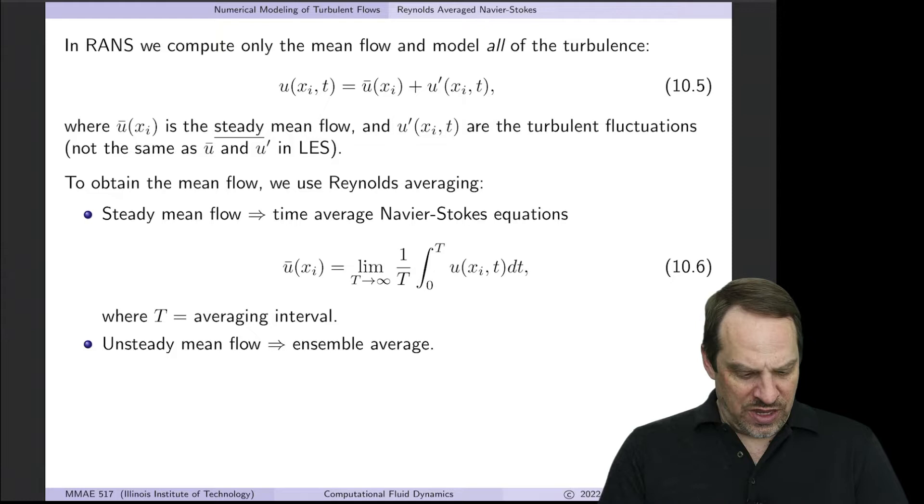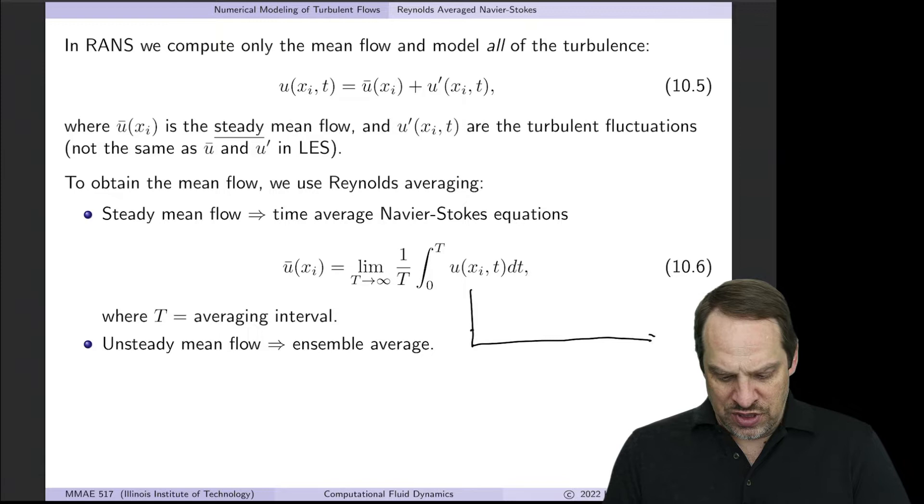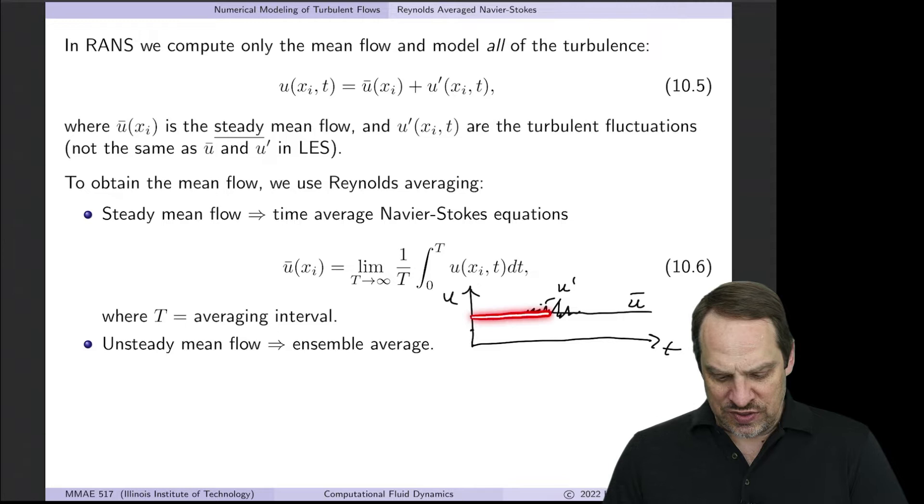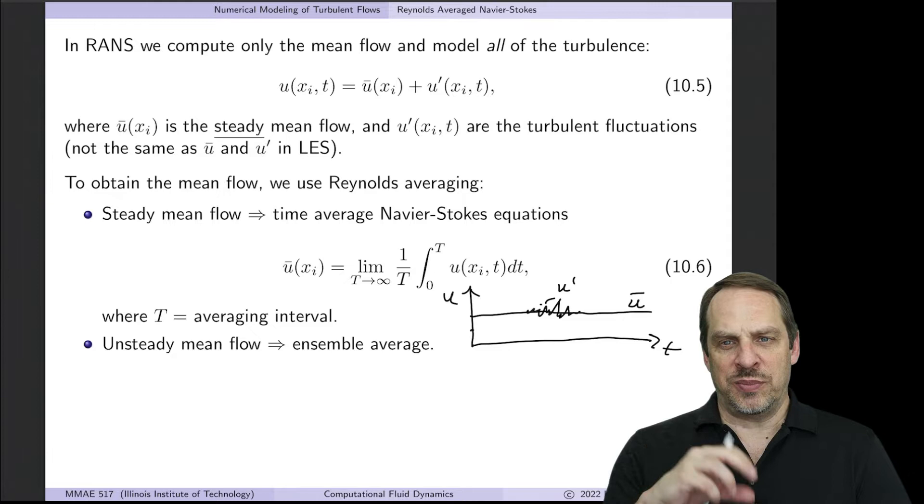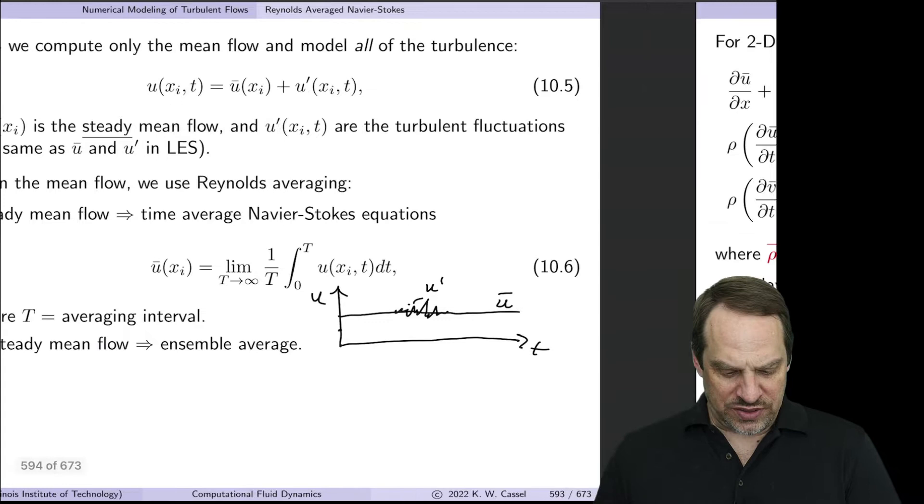If you put a single probe into a flow field and track velocity U over time, there'll be a mean, that's U-bar, and then there'll be the fluctuating part, U-prime, superimposed on U-bar. If the underlying mean flow is unsteady, then we would use an ensemble average. I'm going to focus primarily on the steady case here, because that's typically how it's applied in practice.